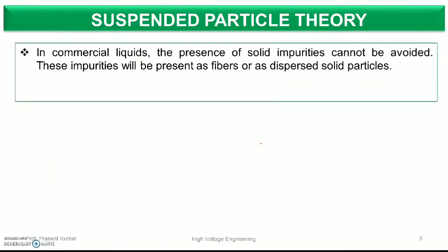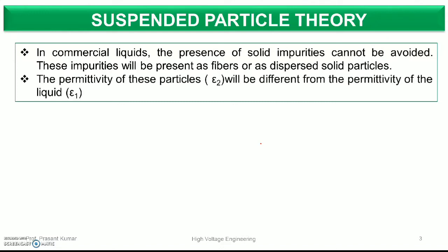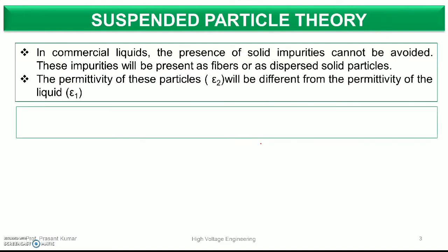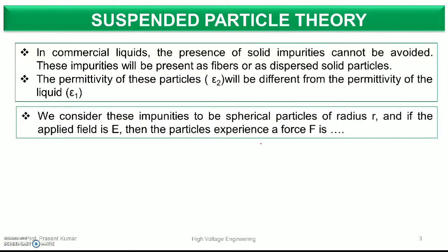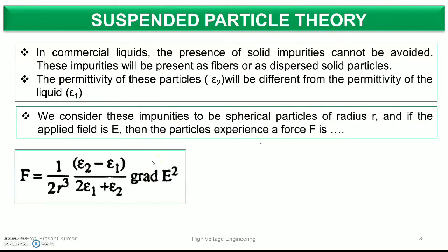Do cases yahan pe bante hain students. Agar mein commercial liquid ki baat karun jo hum generally use karte hain, kisi bhi type ki impurity ko hum generally consider nahin karte hain, especially solid impurities ko hum practically consider nahin kar paate hain. Ab yahan pe do type ki conditions banti hain impurities ke wajay se, jismein maine consider kiya ki meri liquid material ki dielectric permittivity hogi, that is epsilon 2, aur mera jo pure liquid electric material hai uski permittivity hai epsilon 1. Maine consider kar raha hoon ki jo bhi mera suspended particle hai uska radius small r hai aur electric field E apply ho raha hai. Finally, jo force experience hoga liquid electric material mein will be: F = (1/2) r² × [(epsilon 2 − epsilon 1) / (epsilon 1 + epsilon 2)] × gradient(E²).